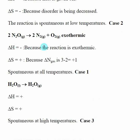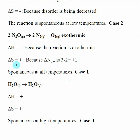Here we have another reaction that is given as exothermic, so delta H is negative. Looking at delta N gas, we have two gaseous products with stoichiometric coefficients of 2 and 1, and one gaseous reactant with a coefficient of 2. So delta N gas equals (2 + 1) minus 2 equals positive 1. Since delta N gas is positive, delta S is positive. With negative delta H and positive delta S, this is Case 1: spontaneous at all temperatures.